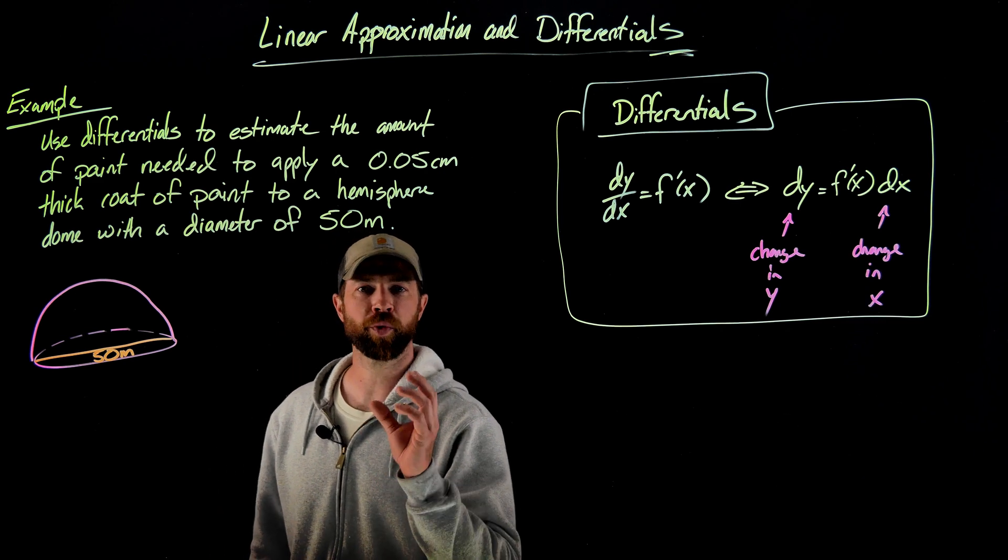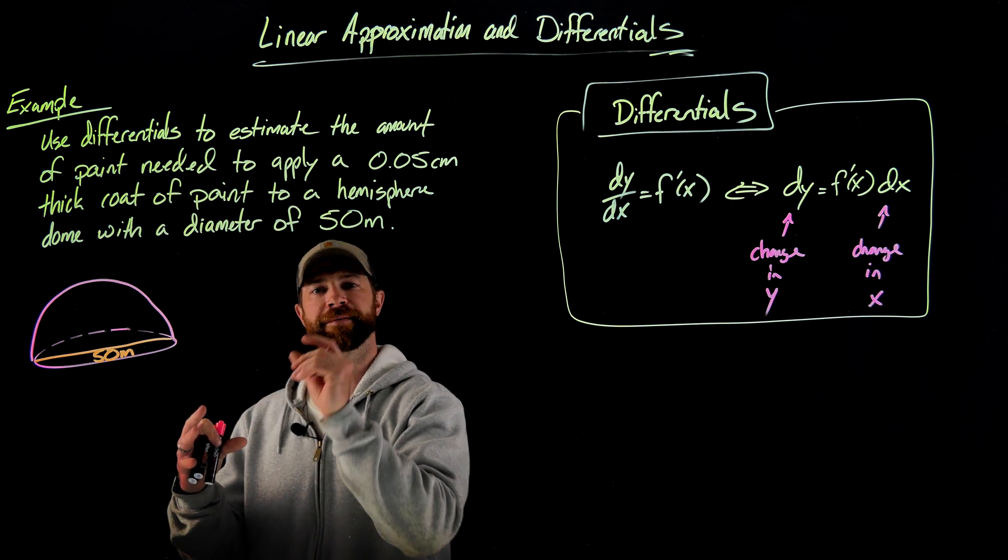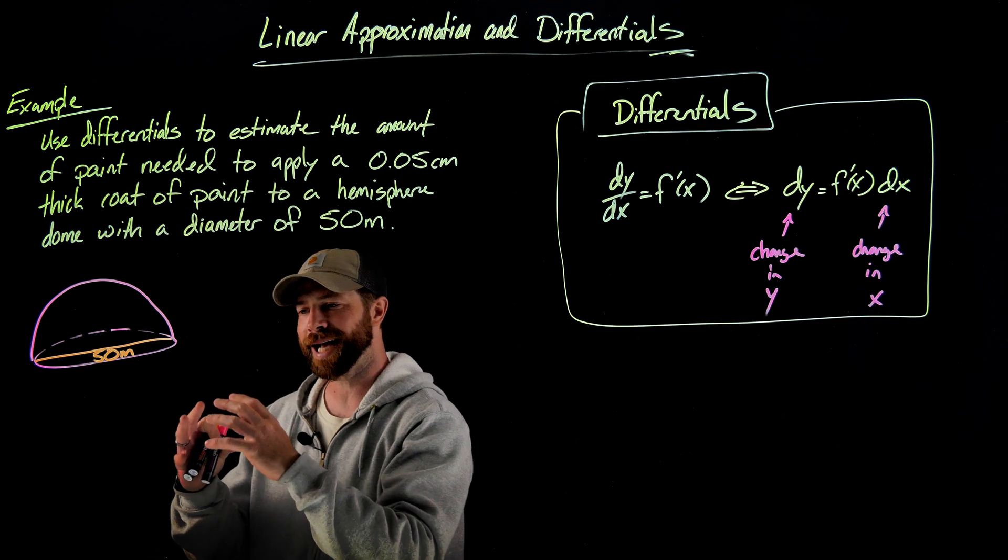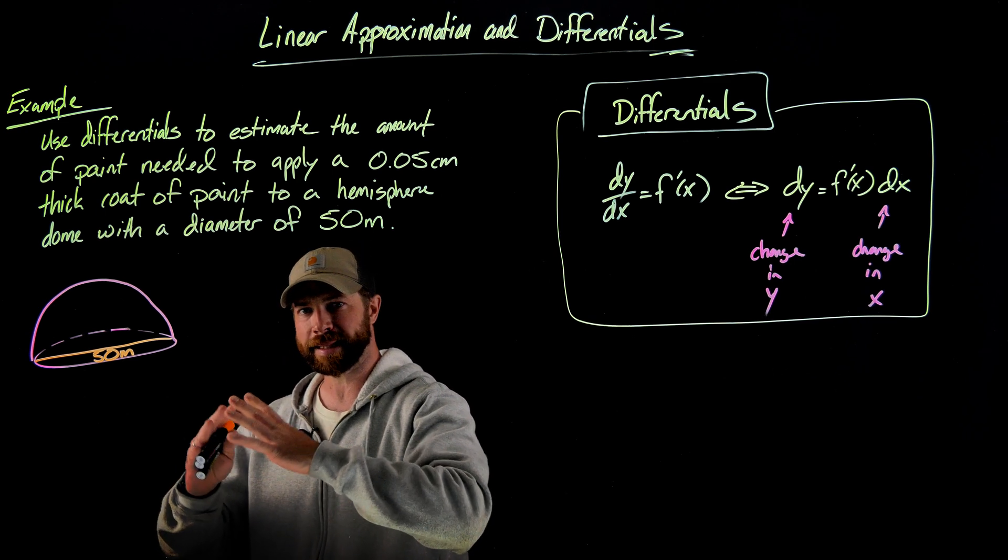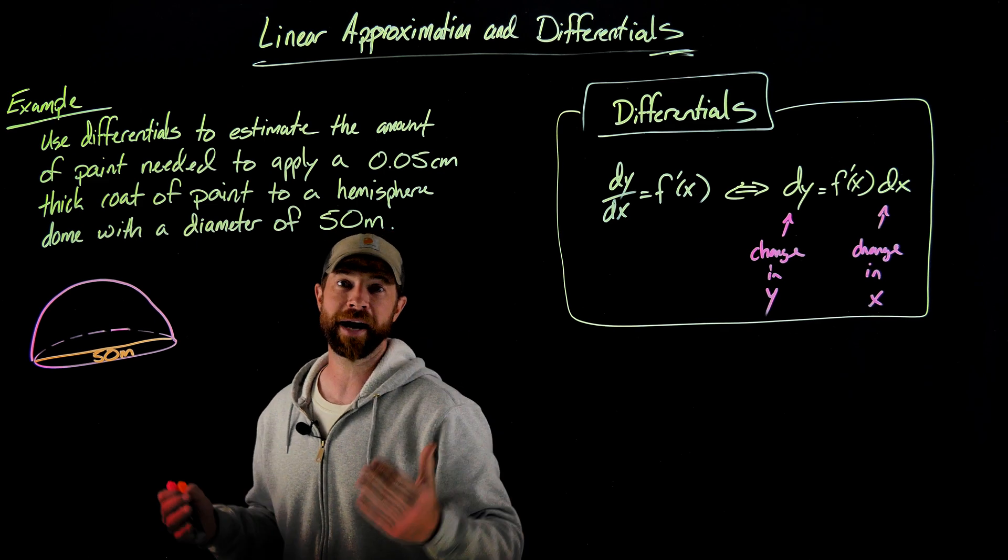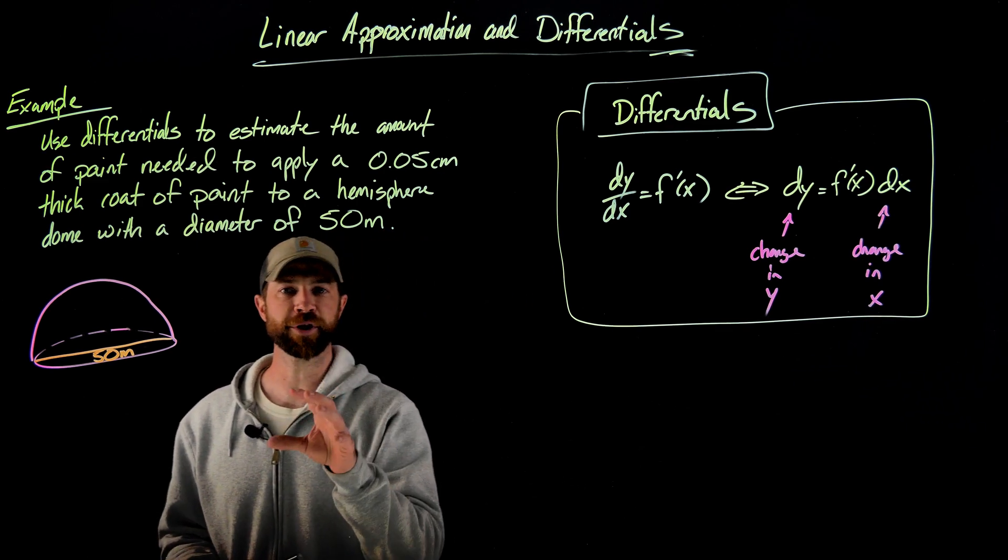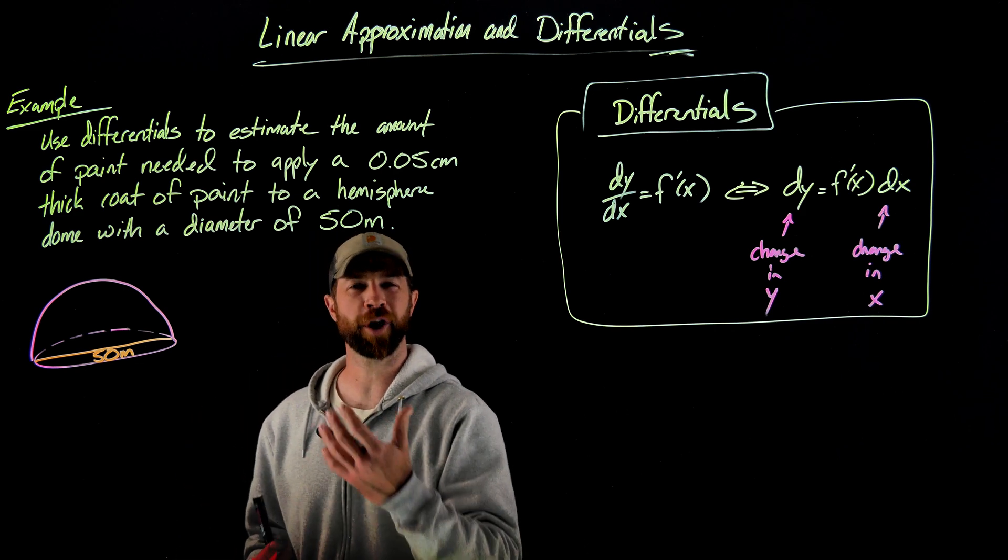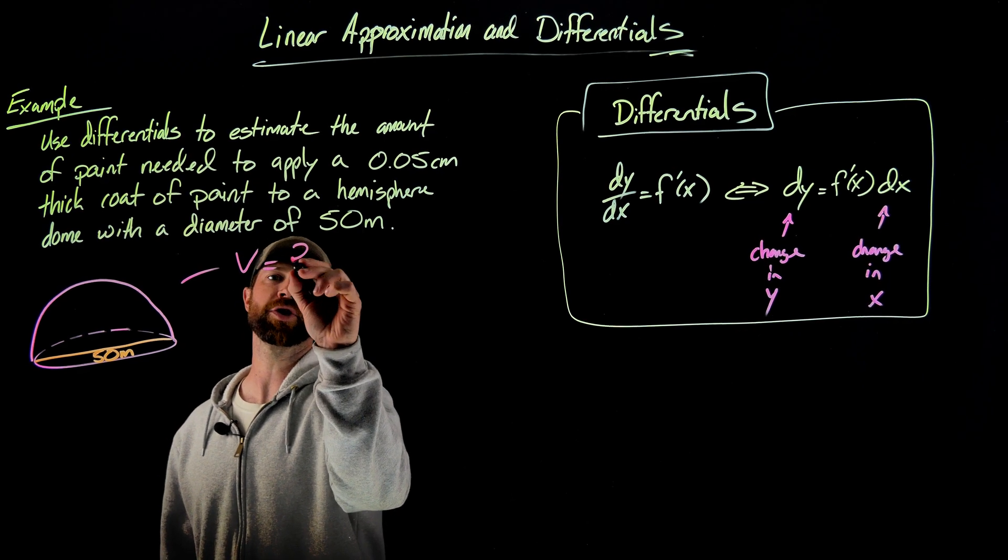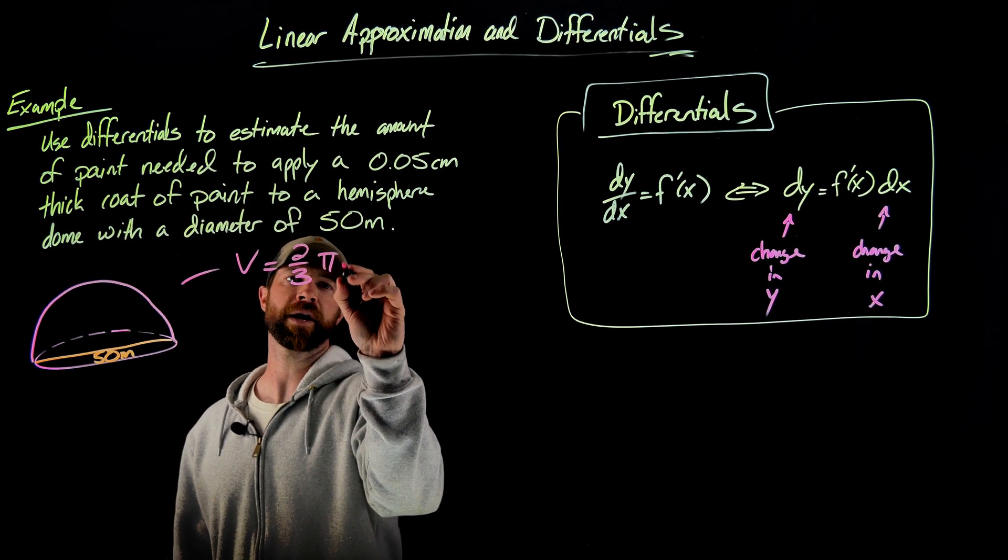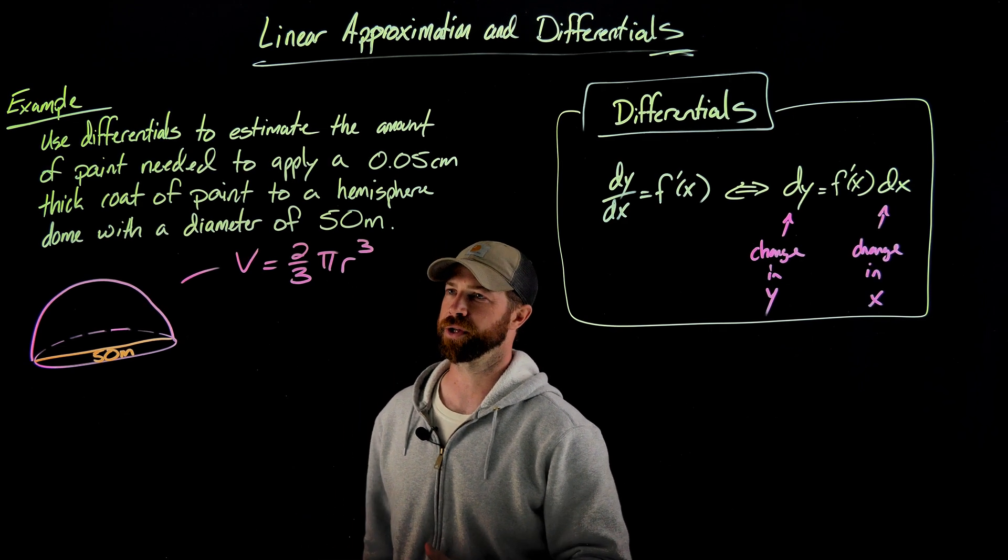To attack this, what we're going to think of is if we think of the volume of this hemisphere, we're going to be thinking of applying this paint on the outside. It somehow increases the volume just a little bit. It makes it a little bit bigger by 500th of a centimeter. So first of all, we're going to first need the volume of this hemisphere. The volume of a hemisphere is half the volume of a sphere. So the volume of this thing would be two-thirds pi r cubed, right? That the volume of a sphere would be four-thirds pi r cubed.